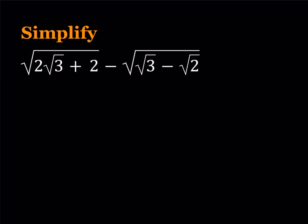Today we are going to simplify a radical expression. We have the square root of 2√3 + 2 minus the square root of √3 minus √2. Now when I came up with this problem, I had a solution, but that solution did not really satisfy me because it looked a little artificial. So I thought about another solution and I found one. I'm going to present two solutions — let's get started.